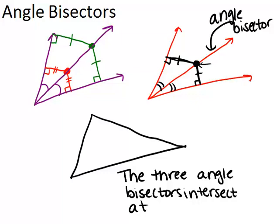So the three angle bisectors of a triangle intersect at a point called the incenter. The incenter is interesting because it's the center of a circle that passes through all three sides of the original triangle, and the incenter is equidistant from each side of the triangle.